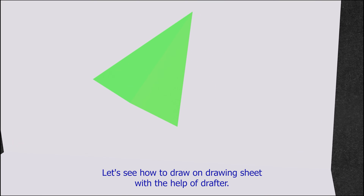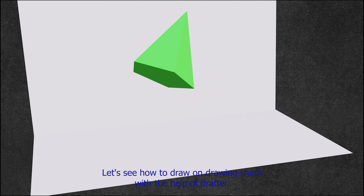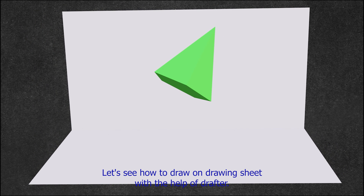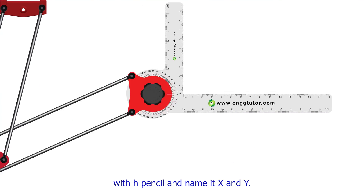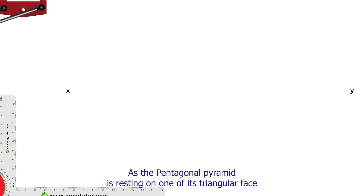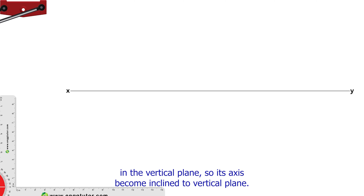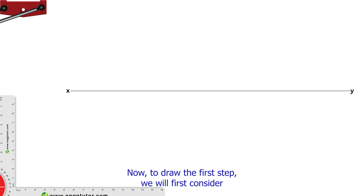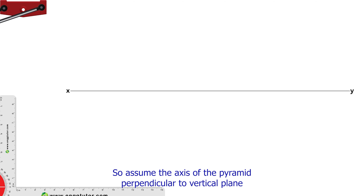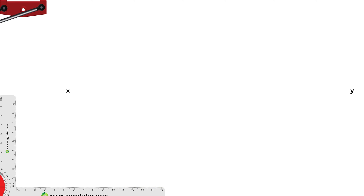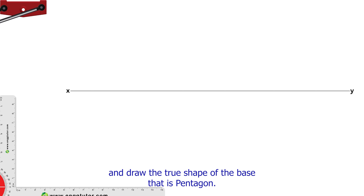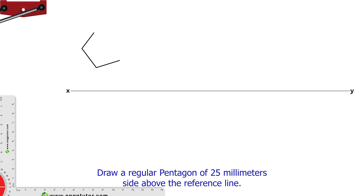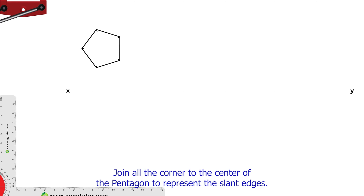Let's see how to draw on a drawing sheet with the help of a drafter. Draw a reference line with an H pencil and name it XY. As the pentagonal pyramid is resting on one of its triangular faces in the vertical plane, its axis becomes inclined to the vertical plane. For the first step, assume the axis of the pyramid perpendicular to the vertical plane and draw the true shape of the base — that is, a pentagon. Draw a regular pentagon of 25mm side above the reference line and join all the corners to the center to represent the slant edges.